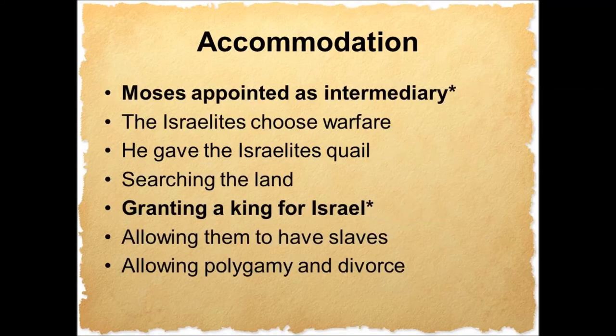Fear, meaning respect, is used in other places and cannot mean to be afraid, to be scared of God — it would contradict so much. You cannot win love through intimidation and threats. The main point is that God takes into account our circumstances and our level of understanding. He takes them into account and makes allowances for them. The term for this is accommodation. Here are some examples of accommodation: Moses being appointed as an intermediary between God and the people; the Israelites choosing warfare; God giving the Israelites quail to eat; searching the land; the granting of a king for Israel; allowing them to have slaves; allowing polygamy and divorce.